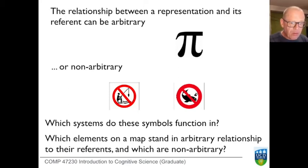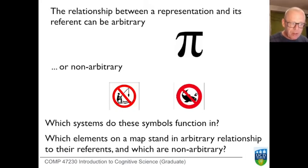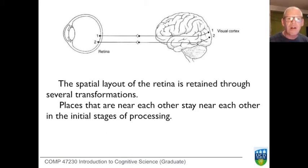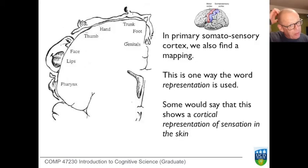I'm going to briefly revisit the cortical maps we looked at before, which are often cited as a very important kind of representation in the brain. I want to clearly distinguish between the sense of representation we already encountered in those cortical maps and the sense of representation with greater degrees of arbitrariness and symbolism that we're looking at now. When we looked at the relationship between the retina and the visual cortex, we saw that the spatial layout of the retina is retained through several transformations and synapses, with the result that places close together on the retina project to places in primary visual cortex that are close together. There are distortions — stretching and compressing — but there is no arbitrary link.